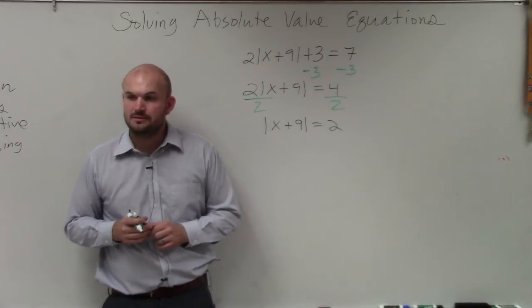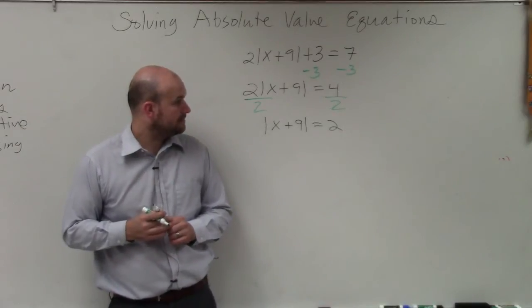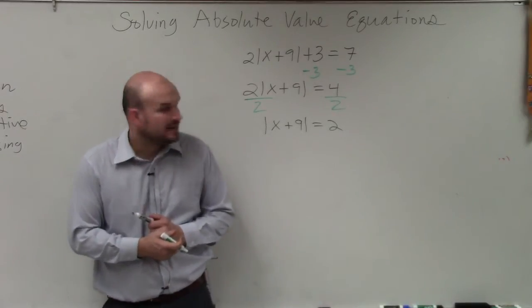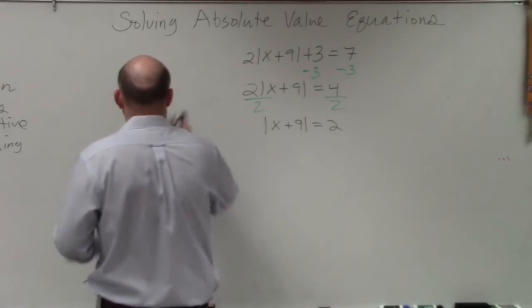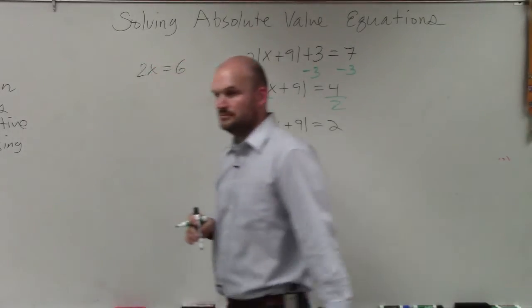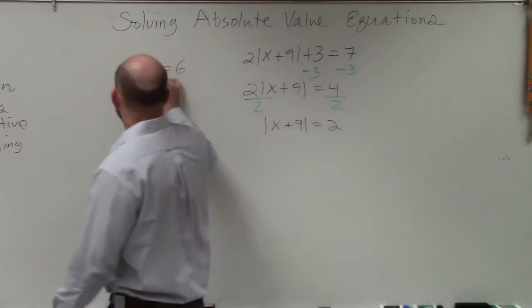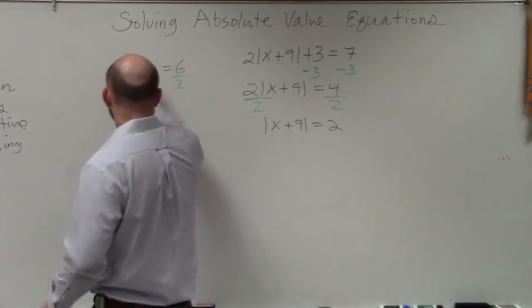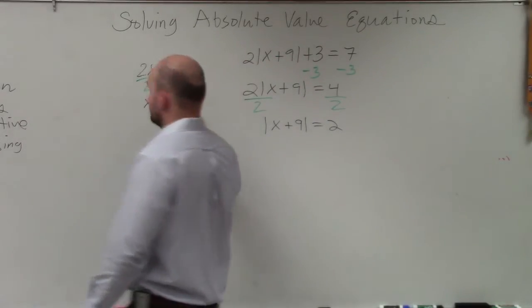So when you divide it, you do just the 2 and the x? Yeah, because think about it like this. If I had 2 times x equals 6, you just divide by 2, right? You're just dividing the 2's. x equals 3, right?